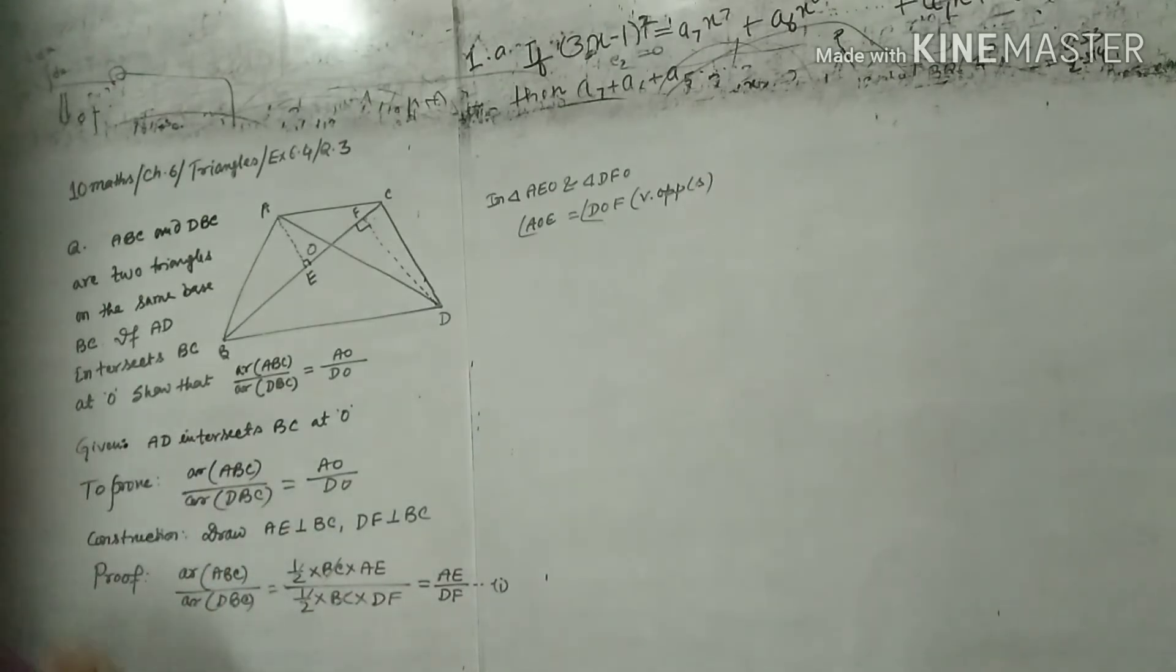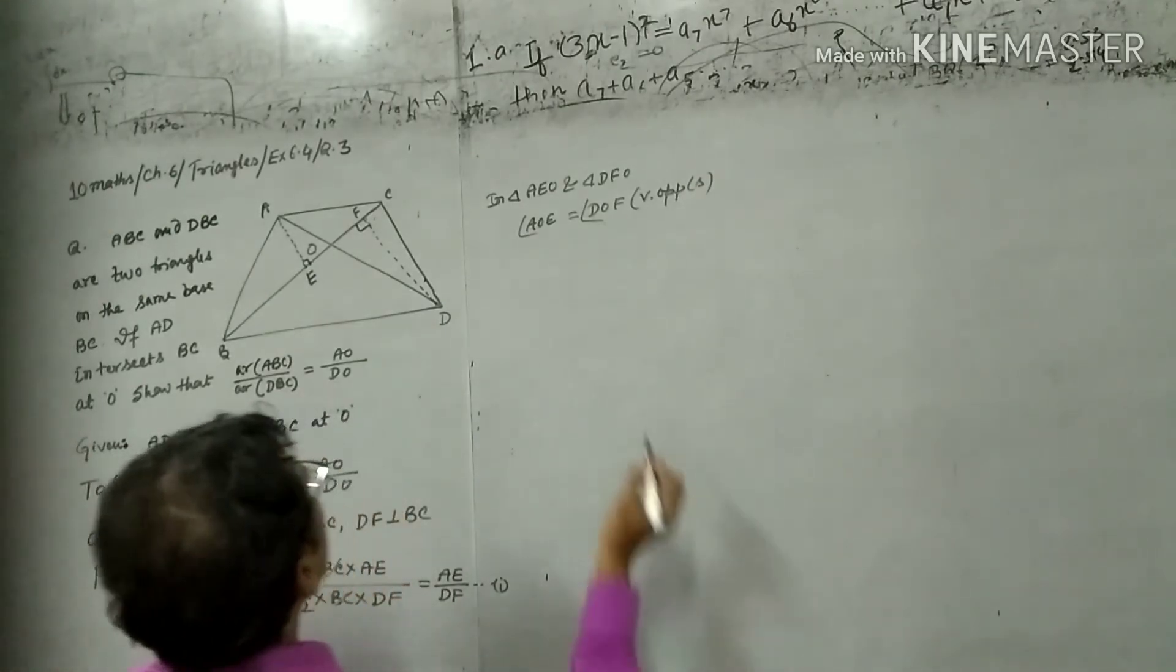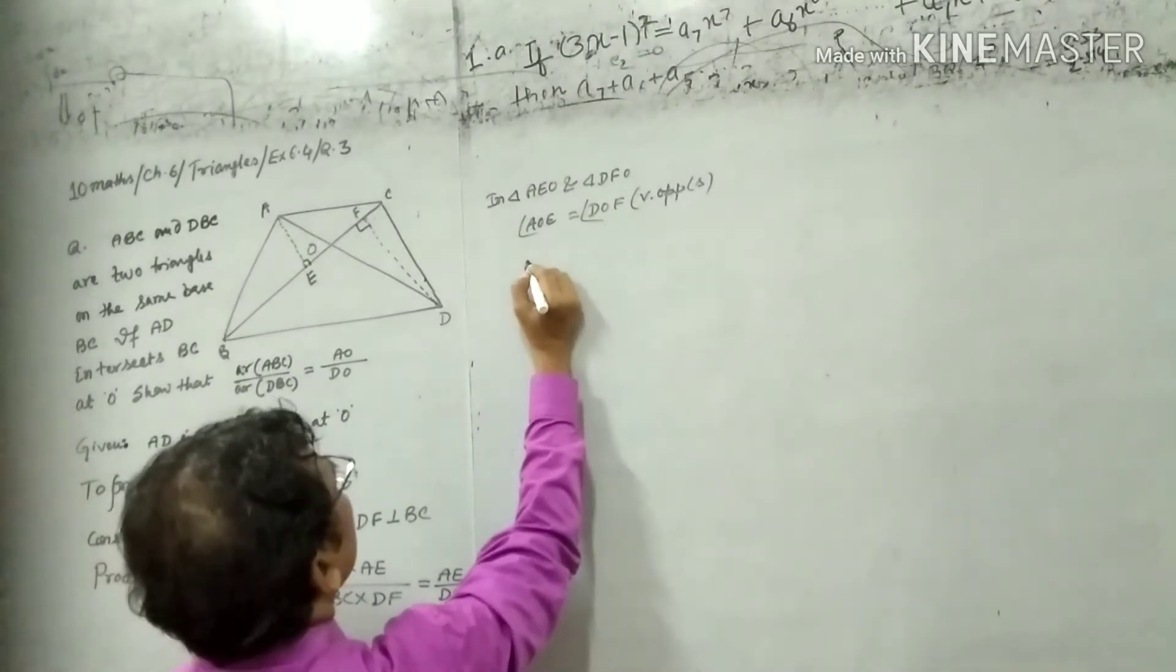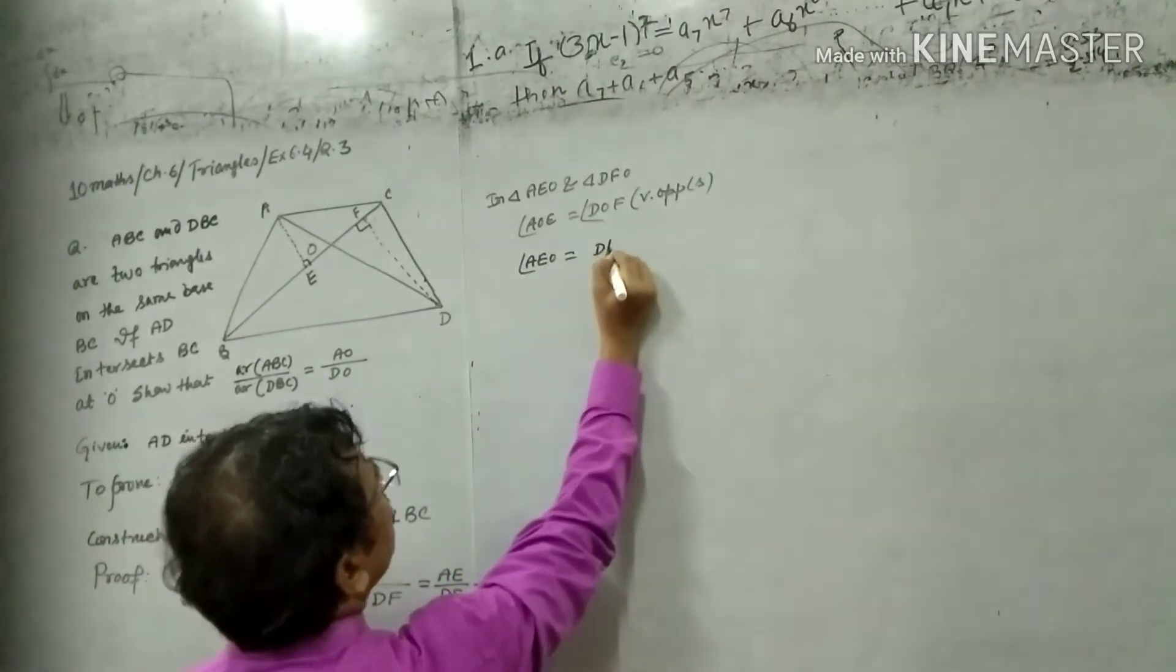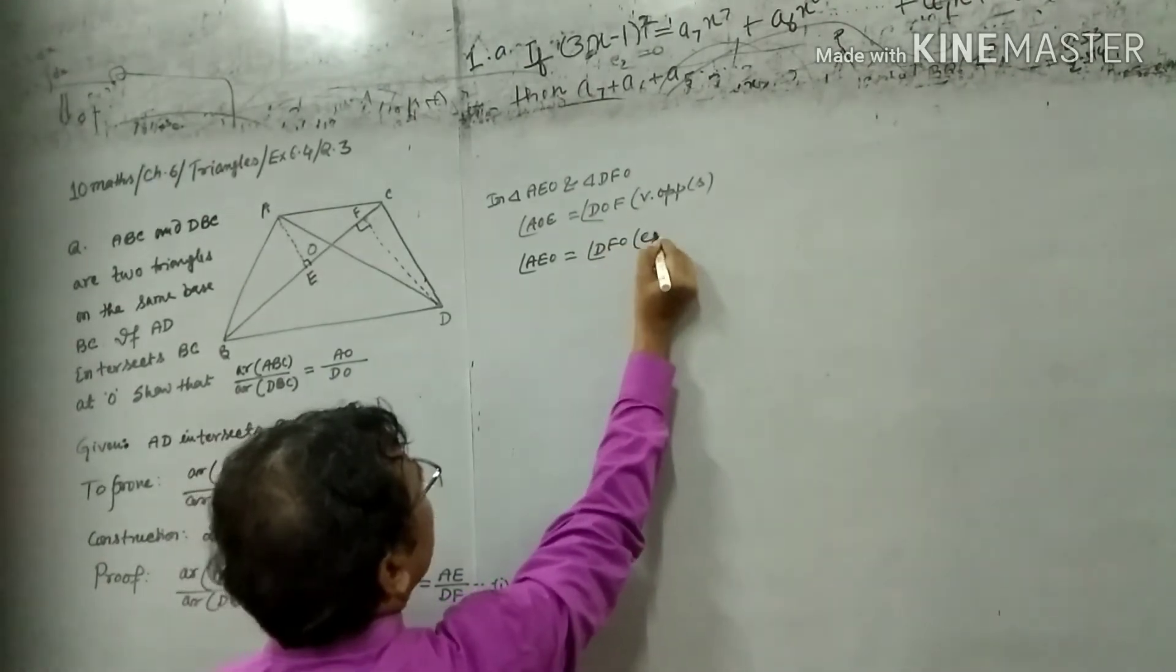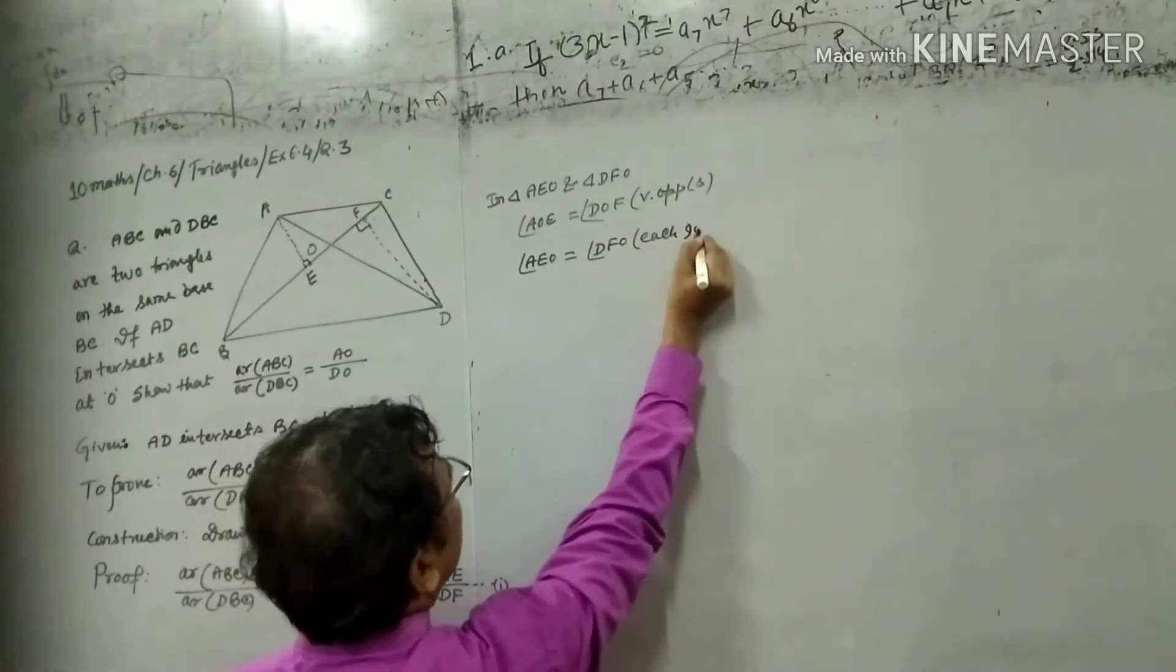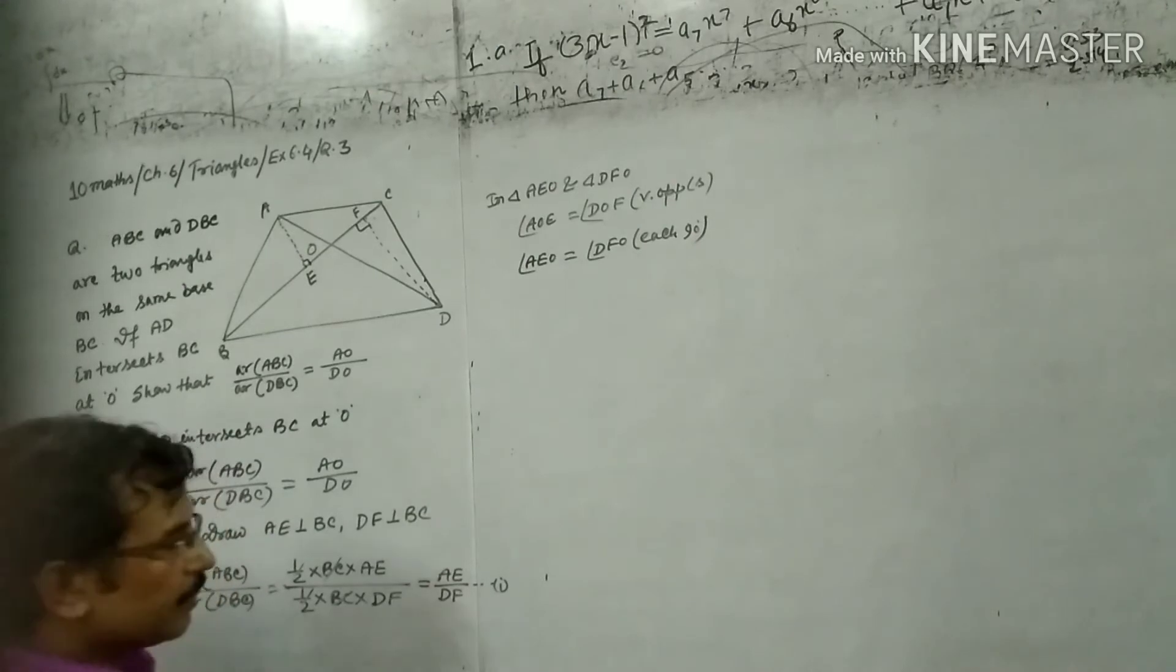And angle AEO equals angle DFO, each 90 degrees by construction.